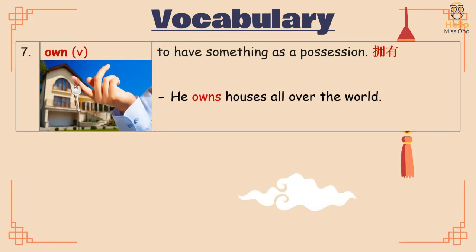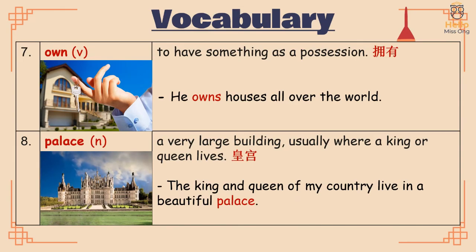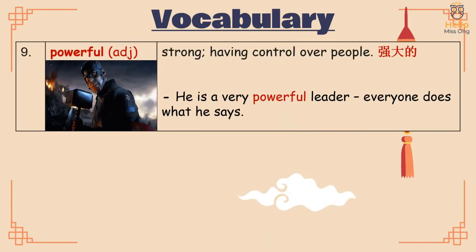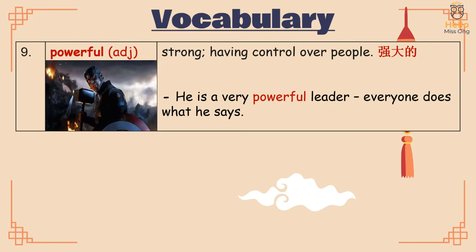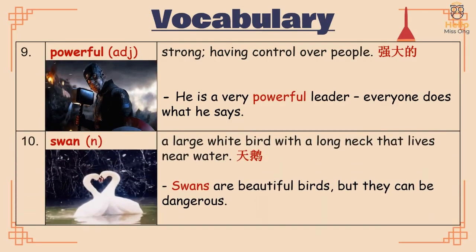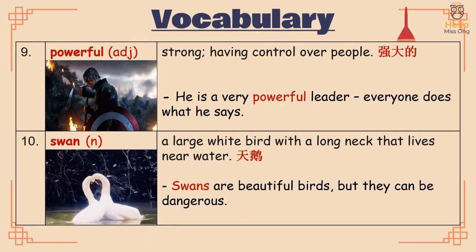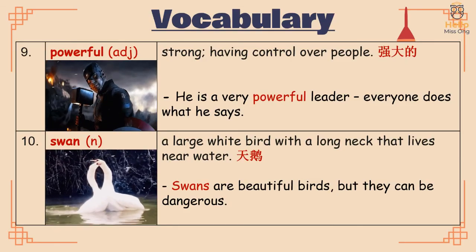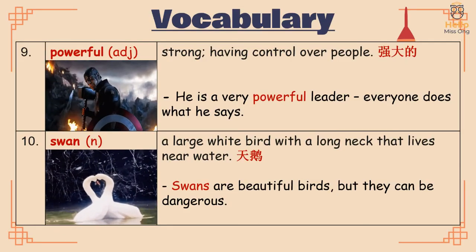Own: to have something as a possession. Example: "He owns houses all over the world." Palace: a very large building, usually where a king or queen lives. Example: "The king and queen of my country live in a beautiful palace." Powerful: strong, having control over people. Example: "He is a very powerful leader — everyone does what he says." Swan: a large white bird with a long neck that lives near water. Example: "Swans are beautiful birds, but they can be dangerous."